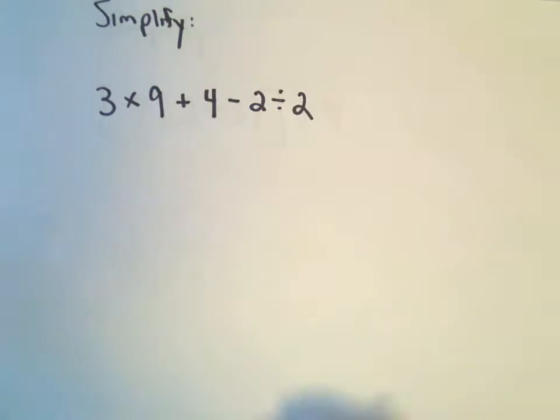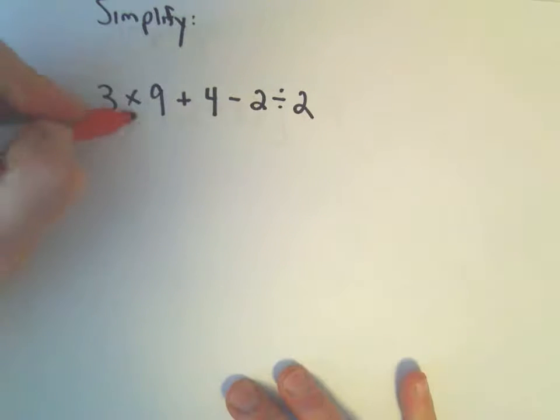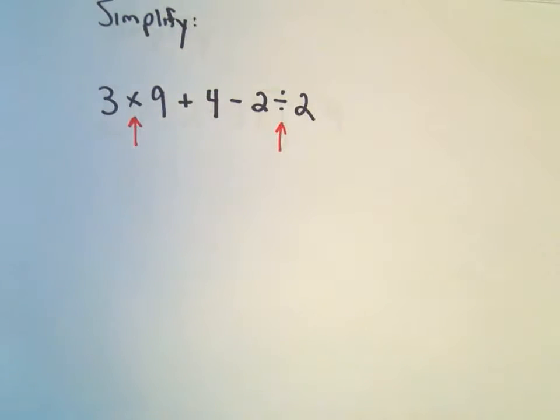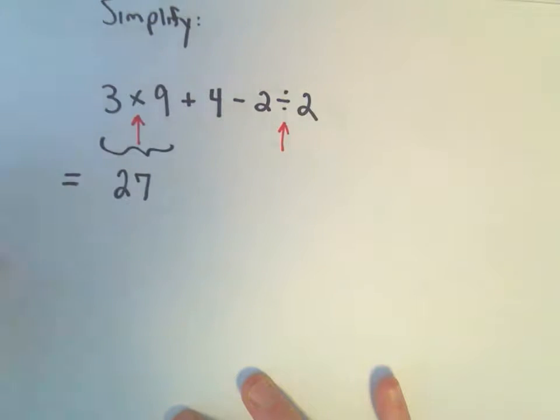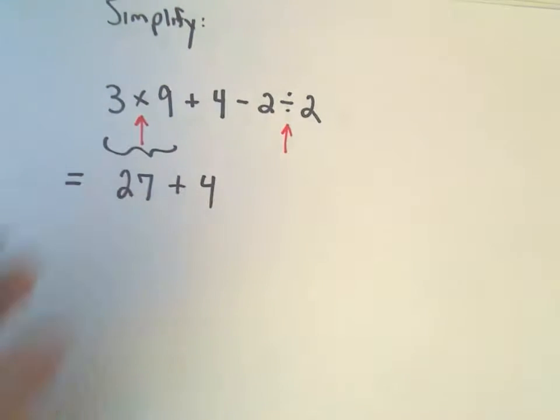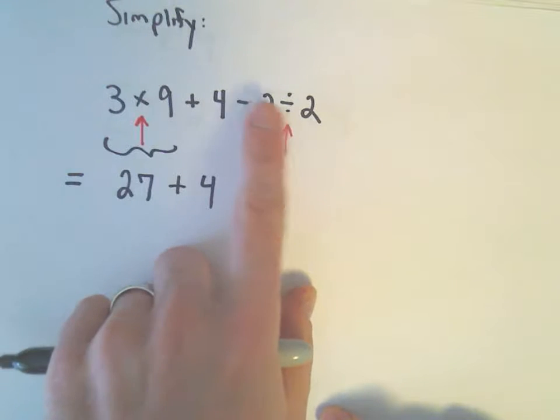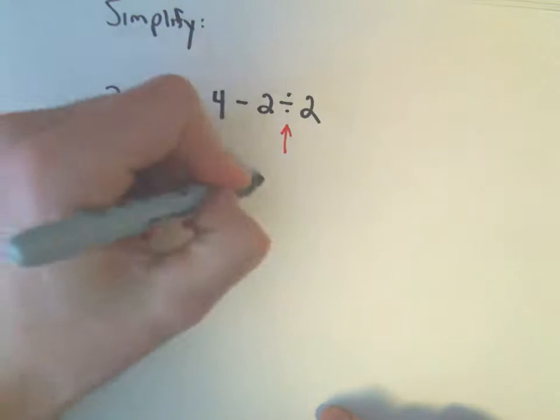We've got 3 times 9 plus 4 minus 2 divided by 2. Again, I see multiplication and division, so those are going to happen first. I'm going to do those operations first. So I say, 3 times 9, that's 27. So I'm combining those two. Plus 4, just hanging out. And the way I think about this, I say negative 2 divided by 2. I've got a negative divided by a positive, which is a negative. And then 2 divided by 2 would be 1. So negative 2 divided by 2 is just negative 1.